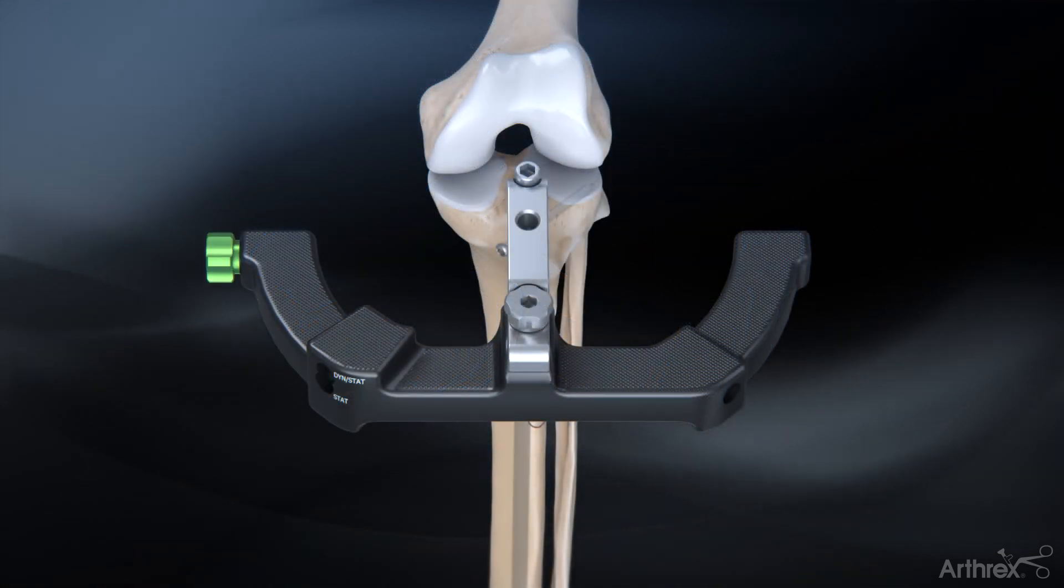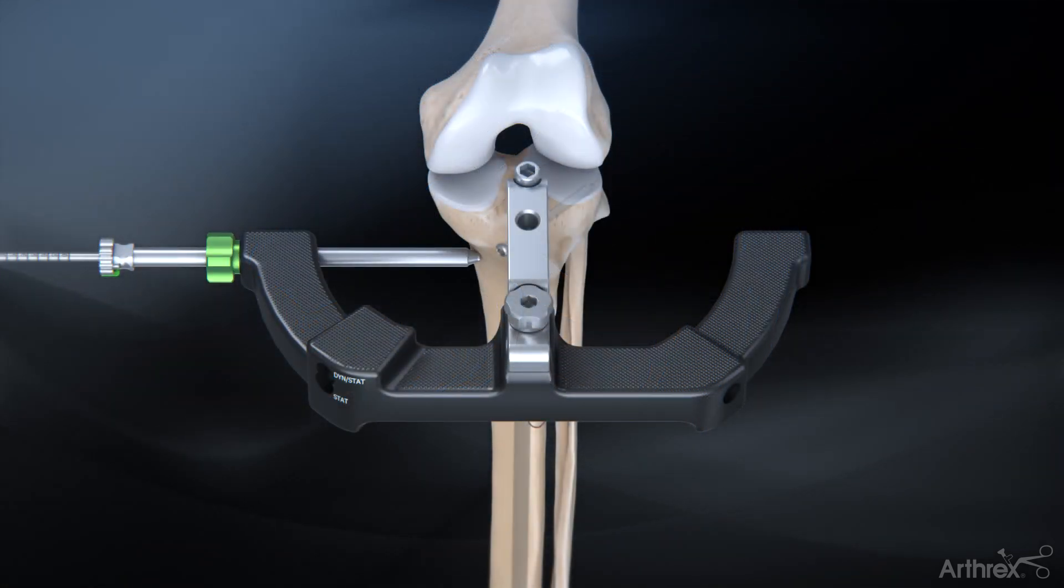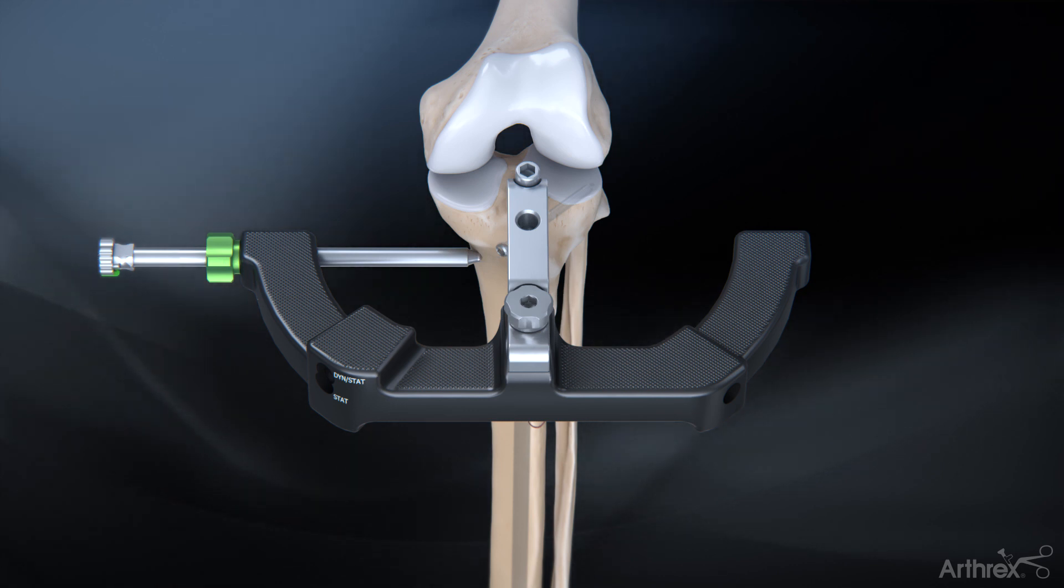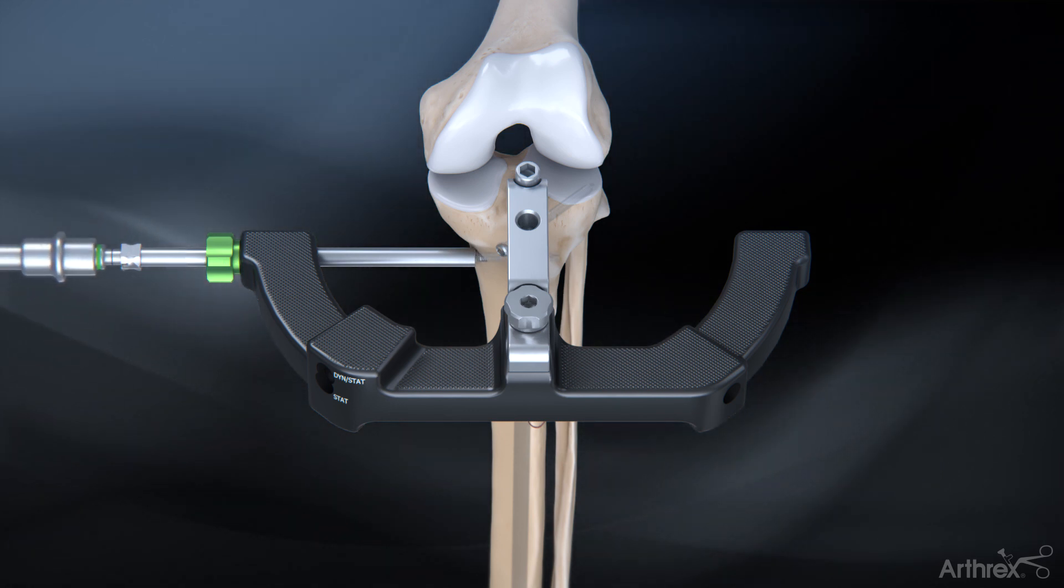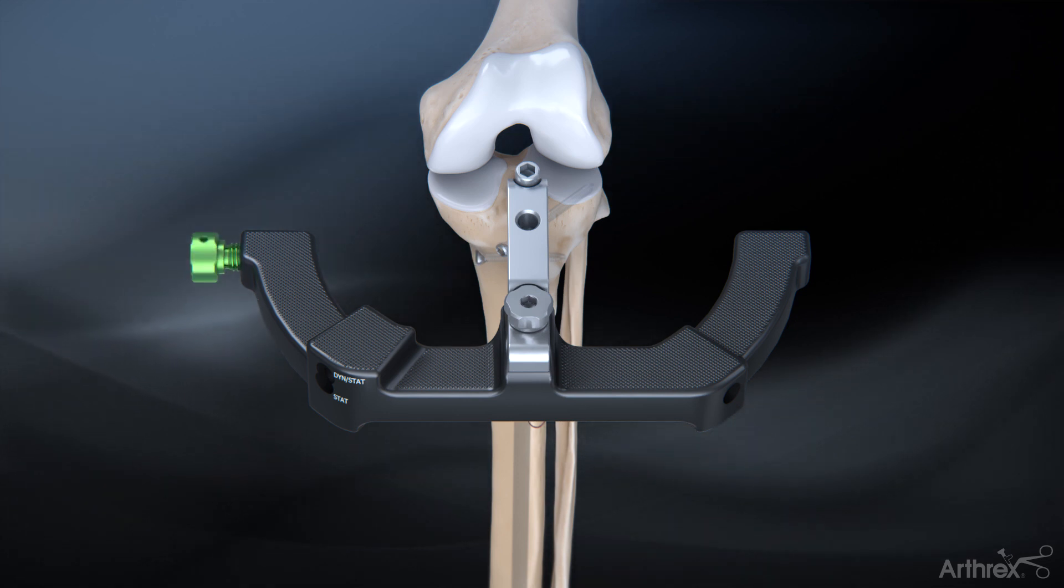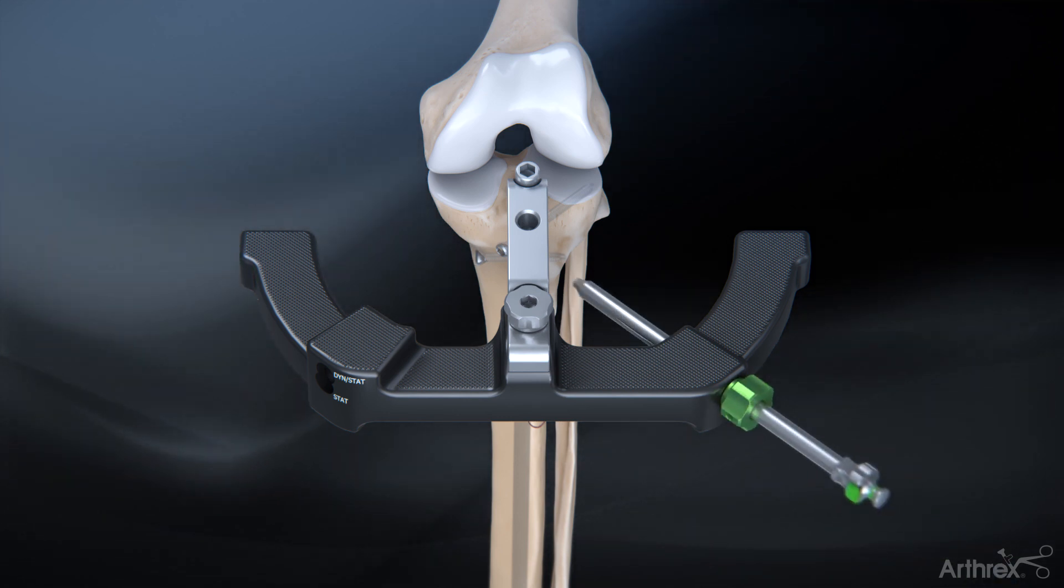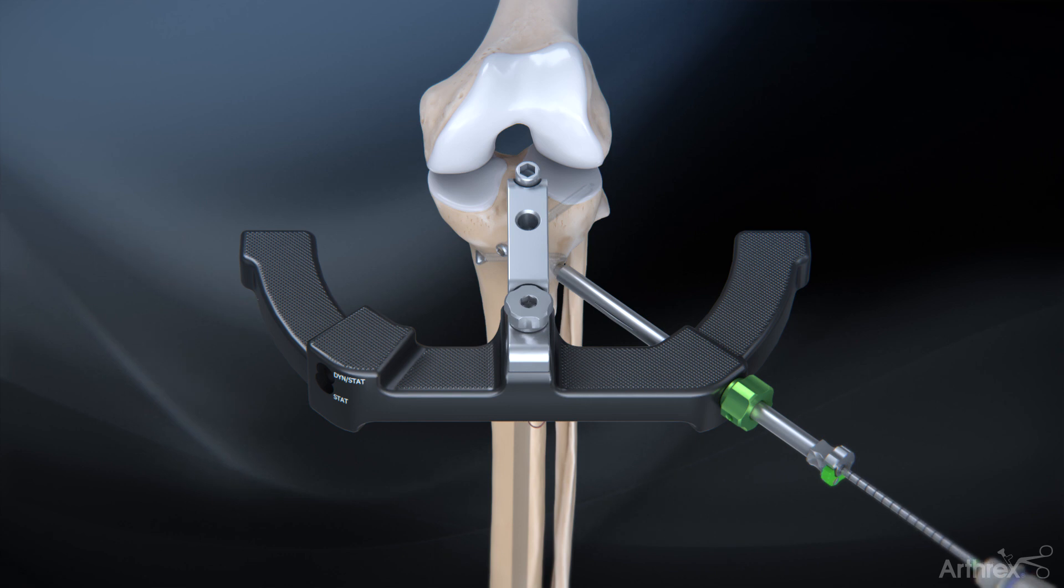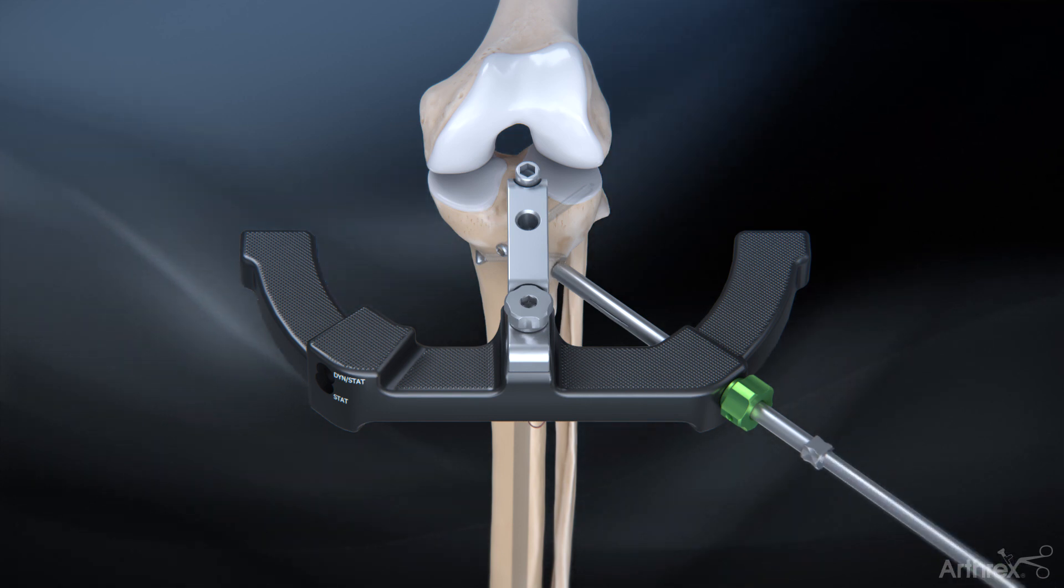Insert the remaining proximal screws by threading in the collet nut and drill guide sleeve, drilling to the desired depth and inserting the appropriately sized captured screw. Complete the remaining proximal screw insertion to fully lock the nail in place and maintain compression.